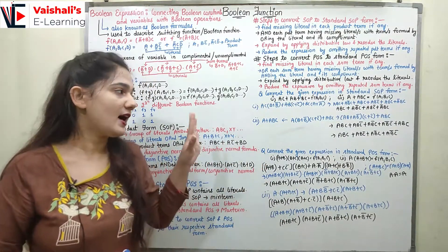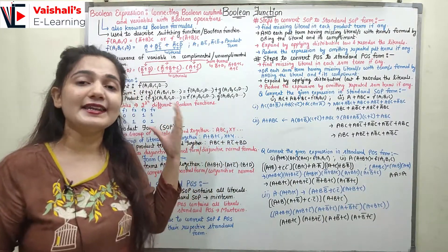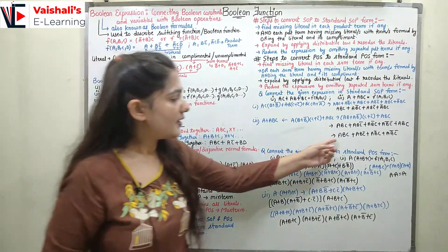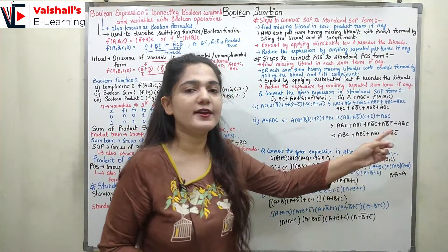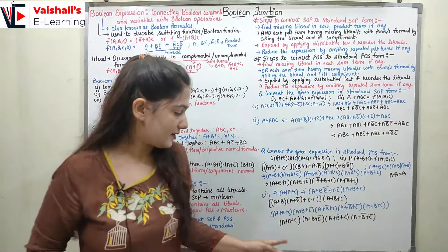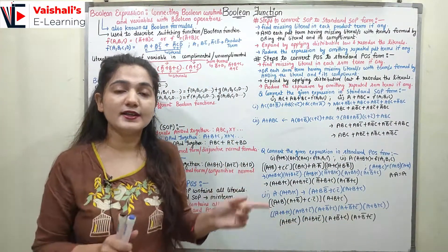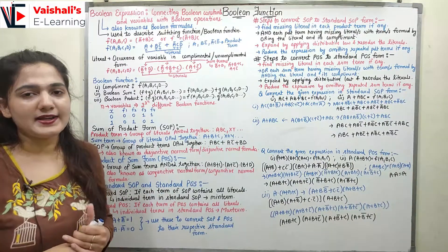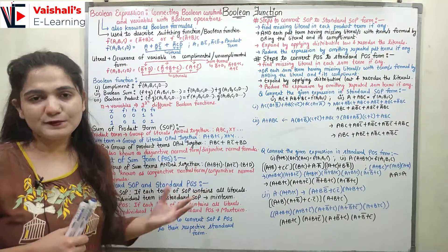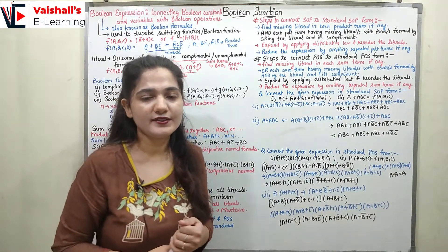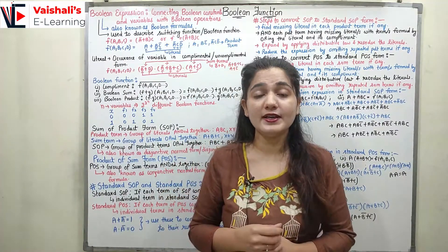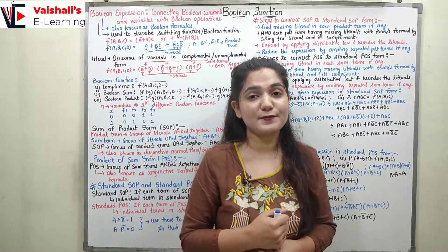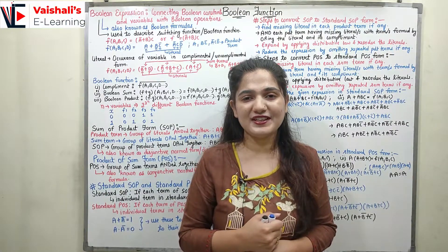Now you can take any expression and convert it to its standard form. In the standard SOP form all individual terms are called min terms, and in the standard POS form all individual terms are called max terms. In the next class we are going to discuss min terms and max terms in detail. If you have any doubts, please put them in the comments. Please like, subscribe, share, and give your feedback. Thank you.